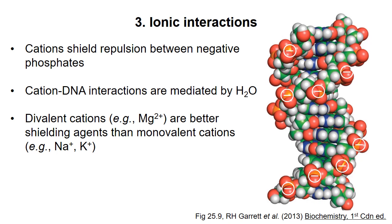The third major type of interaction stabilizing the double helix is ionic interactions. The phosphate groups on the backbone are negatively charged, and cations will bind in between the negatively charged groups to shield the charges from each other. Note that one or more water molecules will normally be positioned between the cation and the phosphate group. The magnesium ion is particularly effective at stabilizing the double helix because the water shell that it coordinates is exactly the right size and geometry to fit nicely between phosphate ions.